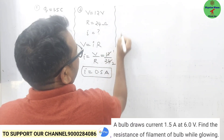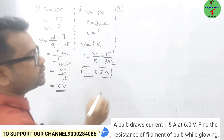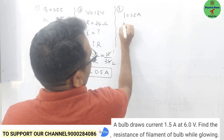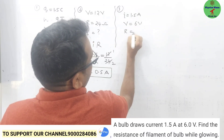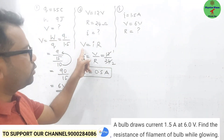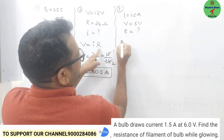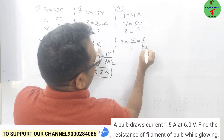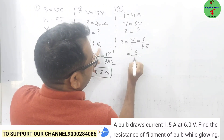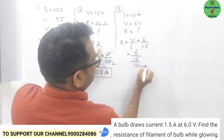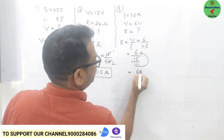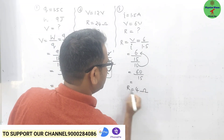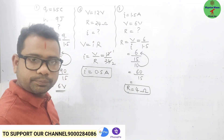Third numerical: the current is 1.5 ampere and potential difference is 6 volt. They are asking us to calculate the resistance. Using Ohm's law and making R the subject: R = V/I = 6 / 1.5. Writing 1.5 as 15/10: this becomes 6 × 10 / 15 = 60 / 15 = 4 ohms.